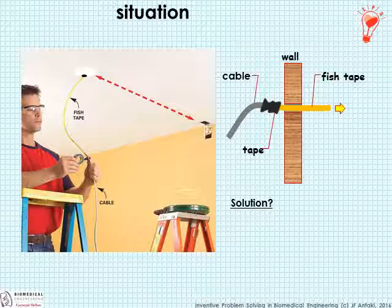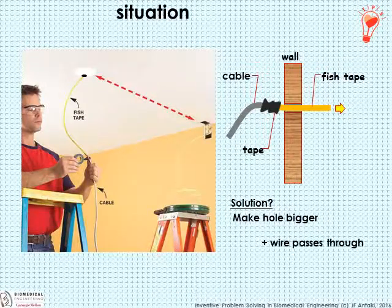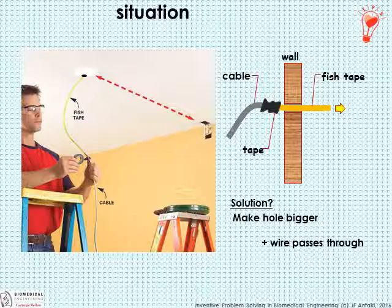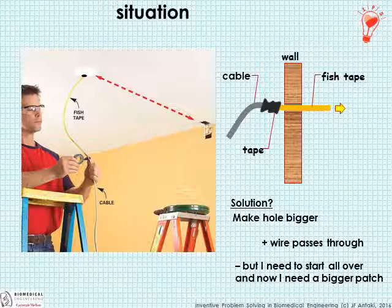A problem arises because that blob of tape is now larger than the wire, and therefore it cannot fit through the hole drilled in the wall. The obvious solution is to just drill a bigger hole, but this is undesirable for two reasons. First, you need to unthread the fish tape to drill the hole and start all over again. And secondly, now you have a bigger hole that needs to be patched. So we have a contradiction: the wire needs to be thin to fit through the hole, and yet needs to be large because of the tape interconnection holding the two cables together.